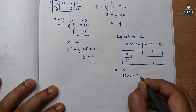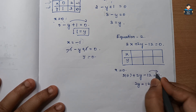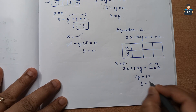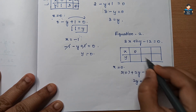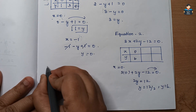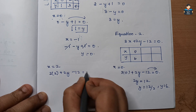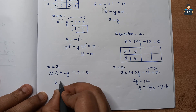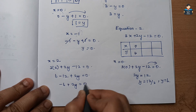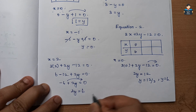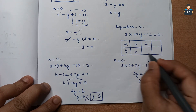Substituting x equal to 0 into equation 2: 3 into 0 plus 2y minus 12 equal to 0, so 2y equal to 12, y equal to 6. So x value 0 gives y value 6. Next, substituting x equal to 2: 3 into 2 plus 2y minus 12 equal to 0, so 6 minus 12 plus 2y equal to 0, minus 6 plus 2y equal to 0, so 2y equal to 6, y equal to 3. So x value 2, y value 3.